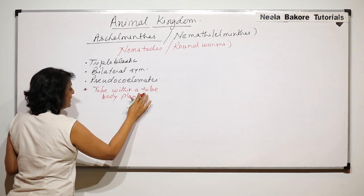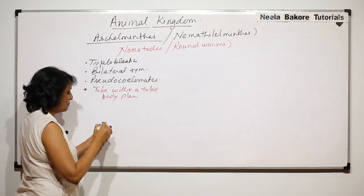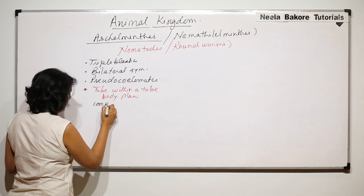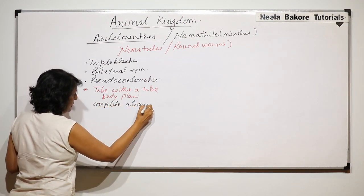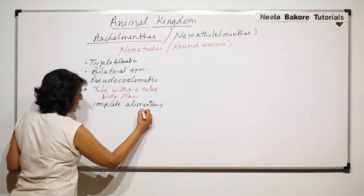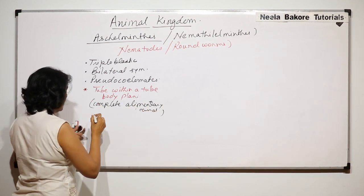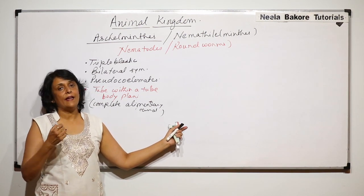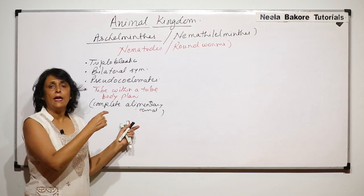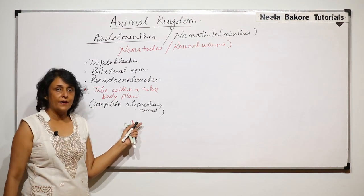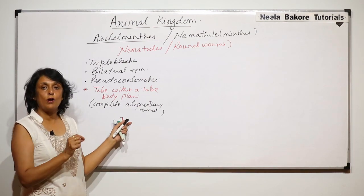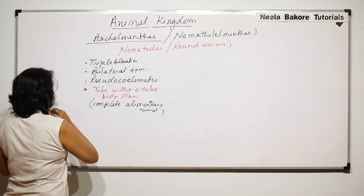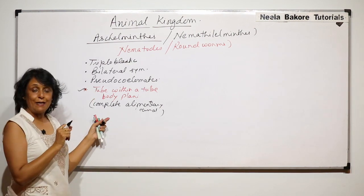The tube-within-a-tube body plan means they have a complete alimentary canal. One end is the anterior end, which is the mouth, and the other end is the posterior end, which is the anus — though in one worm we will give another name to that opening and explain the reason. This complete alimentary canal is seen for the first time in this phylum.